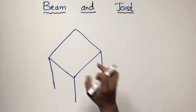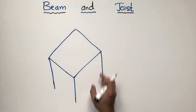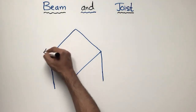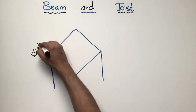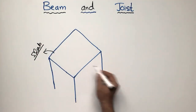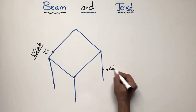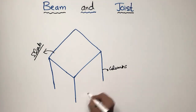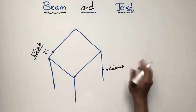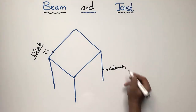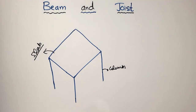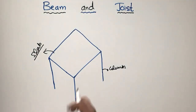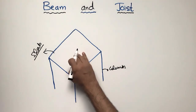I will try to explain the difference with the help of this figure. Let's consider this is any building with a slab — you can see the slab is being provided there as a 2D member, and these are the columns. So now, to explain the difference between these two, let's consider that this building is a very long span building.